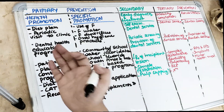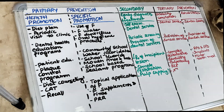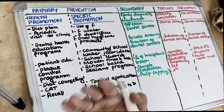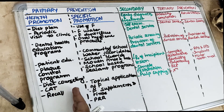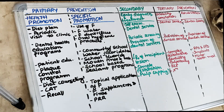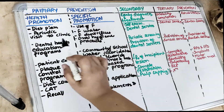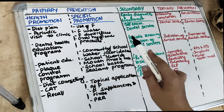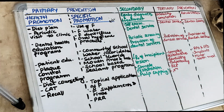Services by the community will include the dental health education program — the community gives education programs to the people, awareness about dental health, and promotion of research and lobby efforts. Services by a dentist are the services we give at the primary level for health promotion. So at the primary level, we have health promotion and specific promotion.